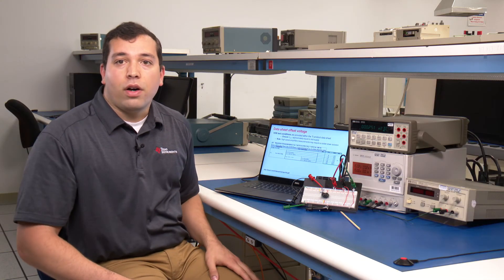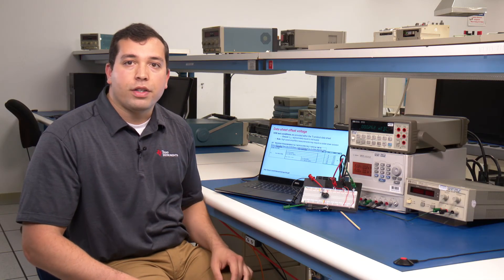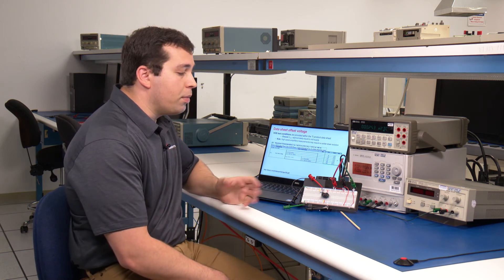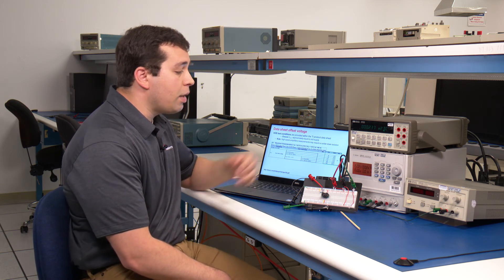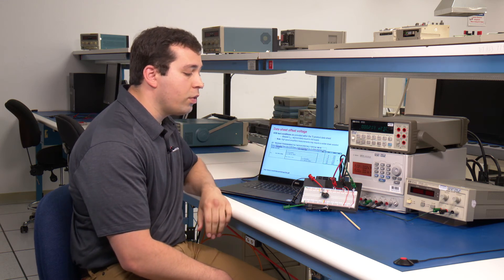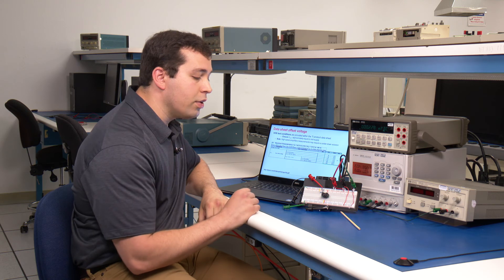Now let's verify how to measure offset voltage of a linear amplifier utilizing a universal prototyping board known as a breadboard. In addition, we'll need a power supply and a digital multimeter to measure the offset voltage of an OPA 192.